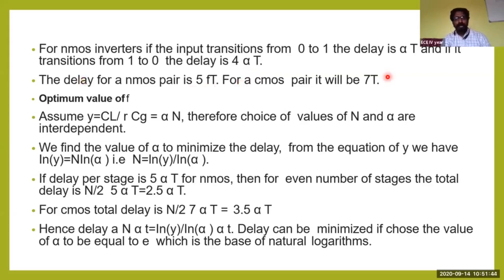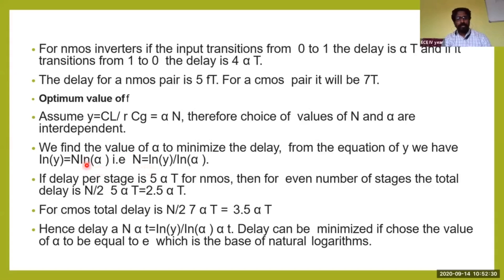To optimize the value, assume Y equals load capacitance C_n divided by R×C_g, which equals alpha^N. Therefore the choices of values of N and alpha are interdependent. To find the values of alpha to minimize the delay, from the equation Y, we get ln(Y) = N × ln(alpha), so N = ln(Y) / ln(alpha). If the delay per stage is phi×alpha×t, then for even number of stages the total delay is (N/2)×phi×alpha×t.